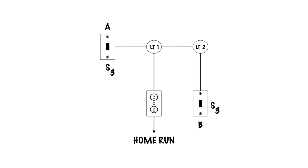We have pipe from switch A to light A, pipe from light 1 to light 2, from light 2 to switch B, and pipe from the home run up to light 1. This isn't a common situation, but this is just to show how important it is that we can number our schematic. The point is how you can determine the amount of wire that goes into the pipe using what's called a numbering system.